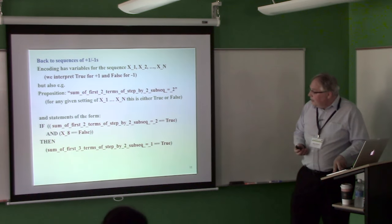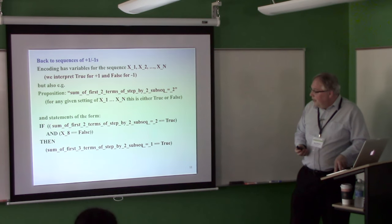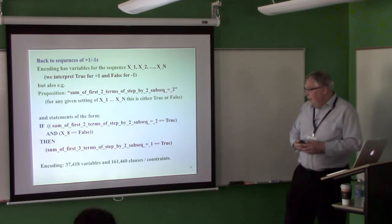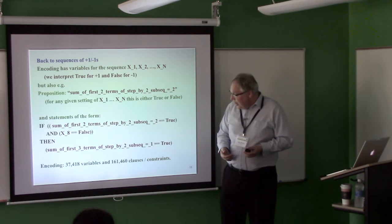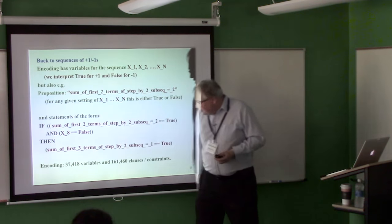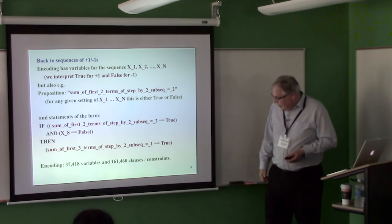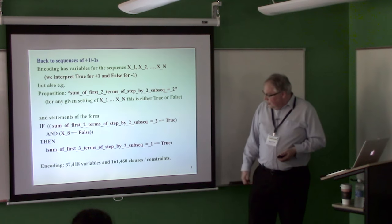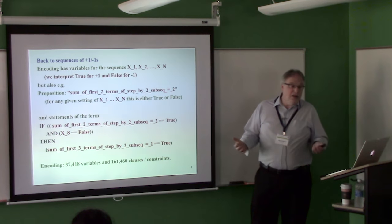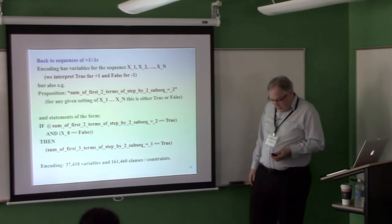So this is a little, little logical encoding of what, how these sums change. And, and that's all, really, I mean, there's not much more to it. So, now if you do the actual work, and I actually did that, just to, just to double check it, so you get the problem is about 37,418 variables, and about 161,460 clauses, and that's actually not a large problem for current solvers.